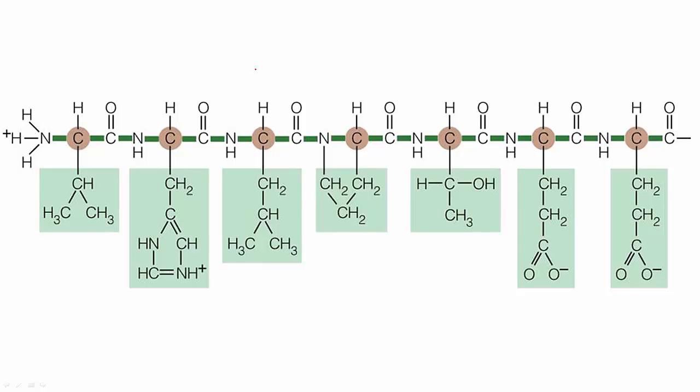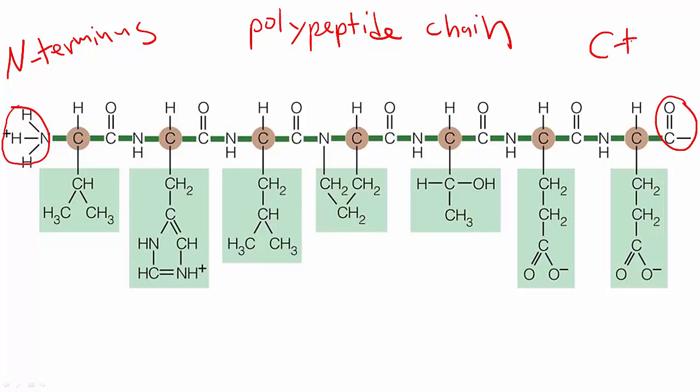And so, this is how amino acids are connected to one another, forming a polypeptide chain. And similar to DNA, it has directionality. At the amino end, the amino group end, we call this the N-terminus. And at the carboxyl end, we call it the C-terminus. The sidechains are highlighted just for clarity. So, all of these are the sidechains.